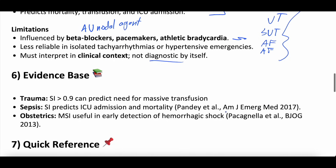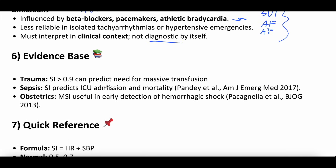The evidence: in the trauma literature, a shock index of 0.9 can predict need for massive transfusion. In the sepsis literature, the shock index can be predictive of ICU admission and mortality. In obstetrics, although the evidence is not as robust, the modified shock index — heart rate divided by MAP — can be an early detection marker for hemorrhagic shock.